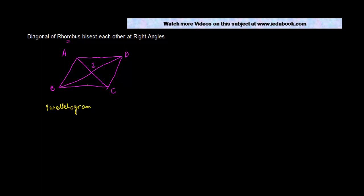And the special property of rhombus is that all the four sides of a rhombus are equal. Or, in other words, AB is equal to BC is equal to CD is equal to AD.